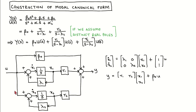The block diagram is now a valid representation of the transfer function. We label the outputs of the integrators as states x1 and x2, with corresponding inputs x1-dot and x2-dot. It is now possible to write down the state equation and output equation directly from the block diagram. The state equation and output equation are here in the modal canonical form.